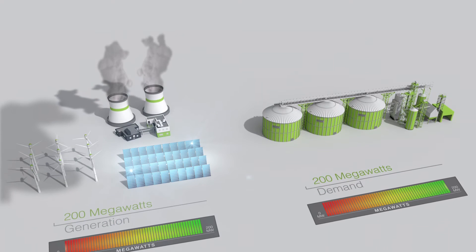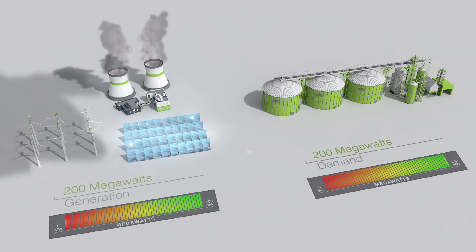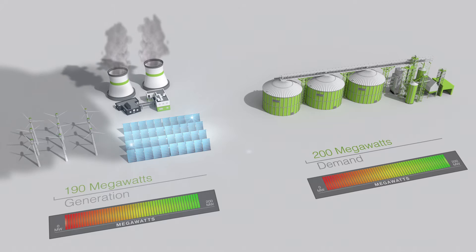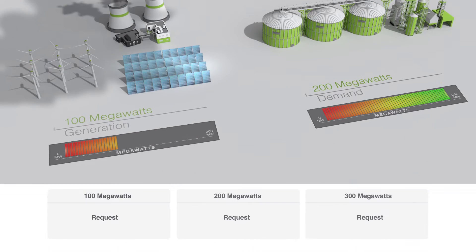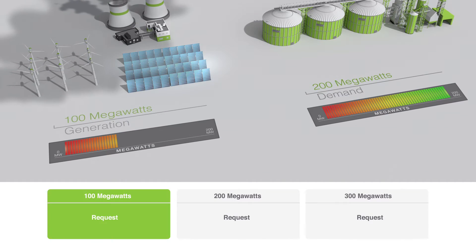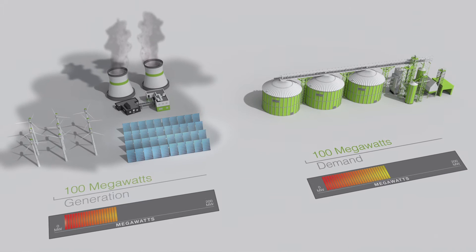In real time, power demand and power generation need to be balanced at each point in time. In Europe, the power system faces imbalances between demand and generation, which continues to challenge power utilities and grid operators.